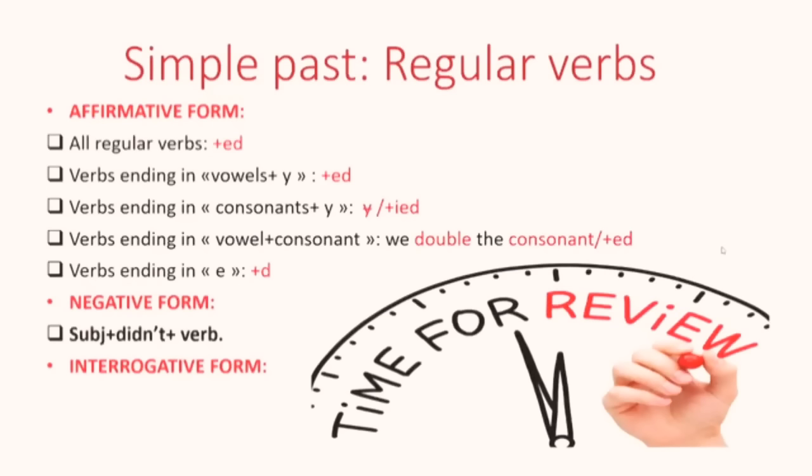We have the subject first, then plus didn't. This is the simple past of which verb? The verb to do. Didn't, and it's in negative form. And then plus the verb without changing anything. Remember, we don't change the verb. The verb stays in infinitive form.